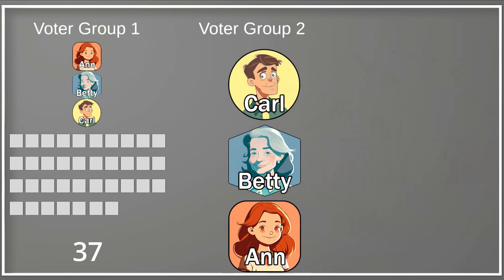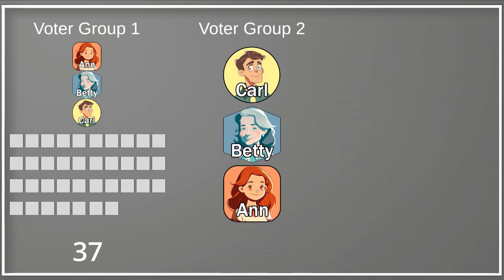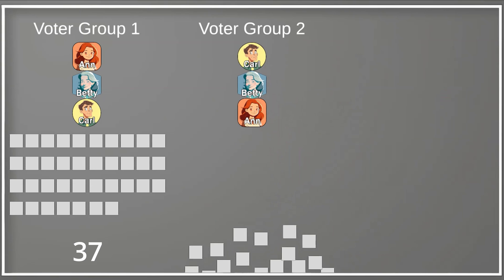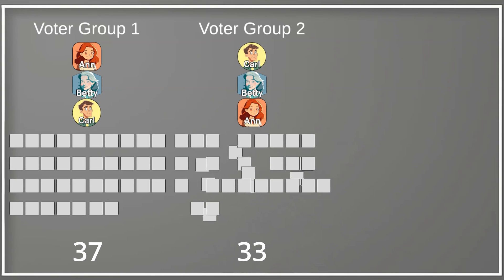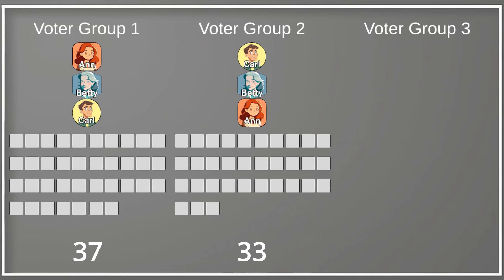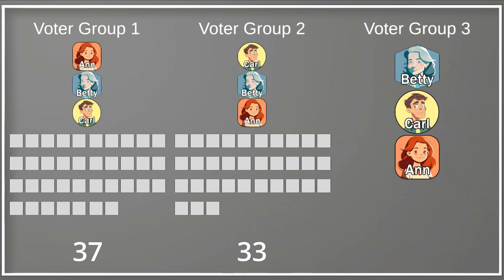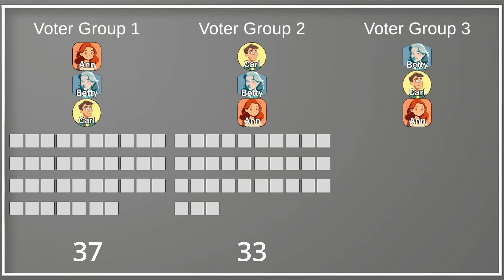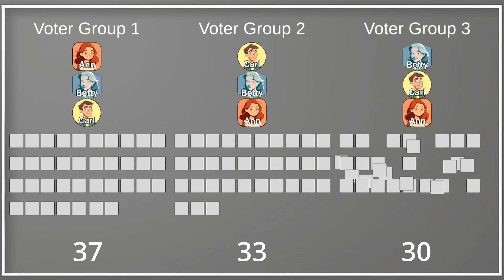Voter group two likes Carl the best, but if they can't have Carl, they like Betty, and they like Anne the least. There are 33 people in this group. In voter group three, people like Betty the most, Carl second, and Anne the least. There are 30 voters in voter group three.